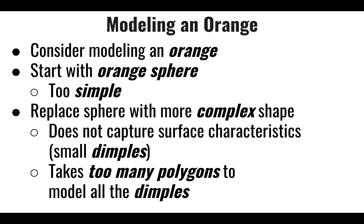Let's consider the challenge of modeling an orange — the fruit. One thing we might consider is that the closest geometry we can think of for an orange would be a sphere with some radius. Perhaps we just paint it with the color orange, and maybe that's enough for the specific application we might be using.